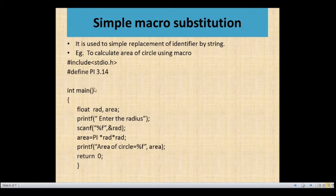Here we have one variable for radius and one for area. We enter the radius, accept it, then calculate: area equals pi into radius into radius. The pi automatically replaces with the value 3.14, because it is a simple replacement of identifier by a string. This calculates the area of a circle.